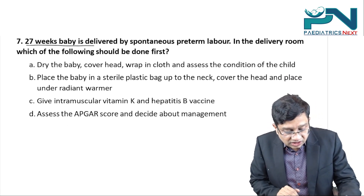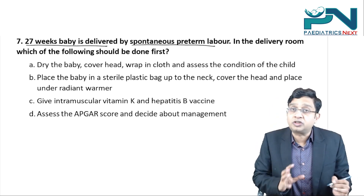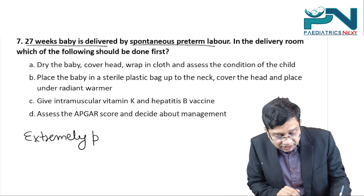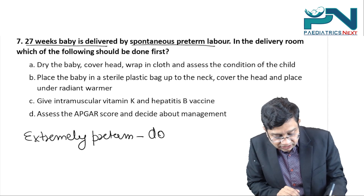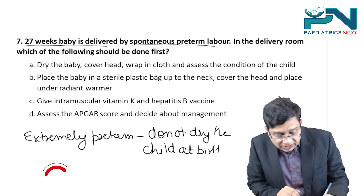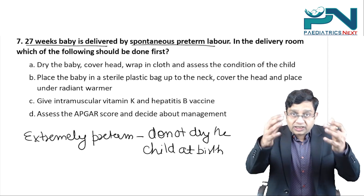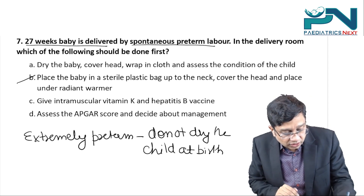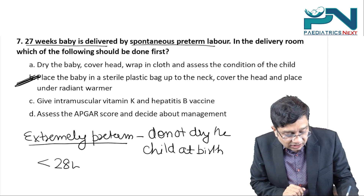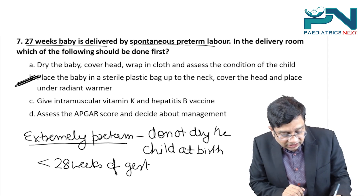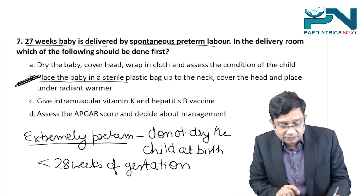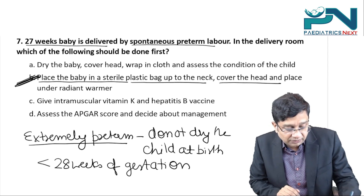Question seven: a 27-week baby delivered by spontaneous preterm labor — what should be done first in the delivery room? In an extremely preterm child (less than 28 weeks), we do not dry the child at birth. Instead, we place the baby in a sterile plastic bag up to the neck, cover the head with a cap, and place the child under a radiant warmer.